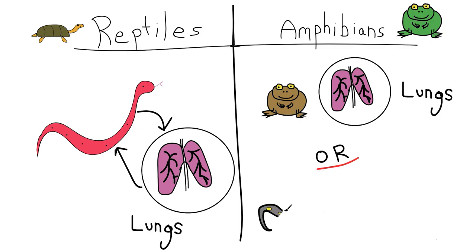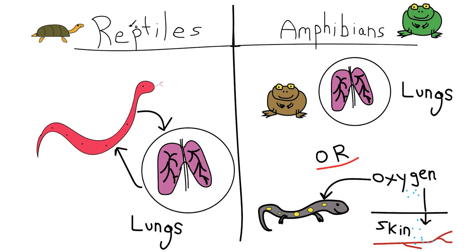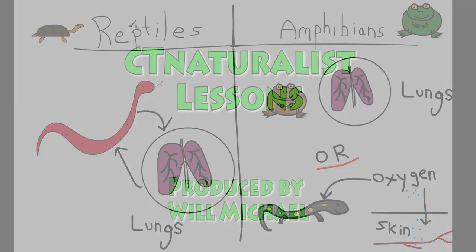Some amphibians have no lungs at all and get all their oxygen through their skin. It's important that lungless amphibians always remain wet. The oxygen needs to pass through a layer of water to enter their bodies.